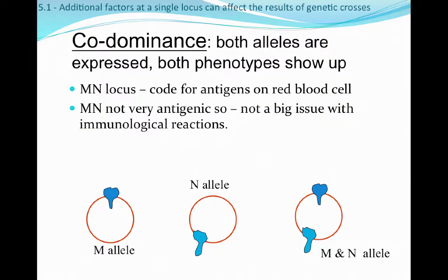Codominance is where we see both alleles actually being expressed in the phenotype. A solid example is blood types in humans. Our red blood cells have antigens on them — proteins coded for by a gene specific to us individually. Some of us only have the M allele and therefore only the M antigen; some only have the N allele; and some have both M and N alleles, so both show up on the red blood cell. Codominance is where both alleles show up and are expressed.